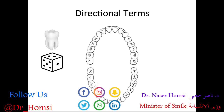Now let's talk about directional terms. It's helpful to think about a dice or cube that has six surfaces — a tooth is similar except we don't count the bottom surface, so there are five surfaces to consider. The outer surface pointing towards the face is called the facial surface.